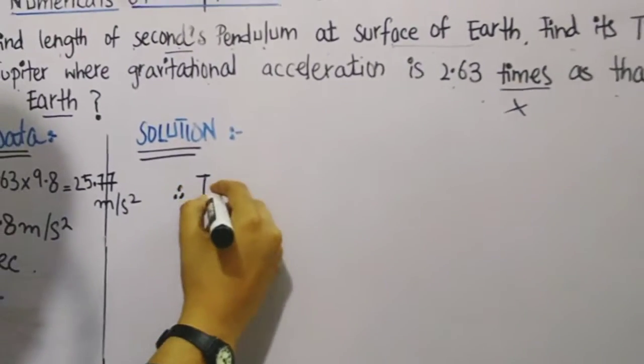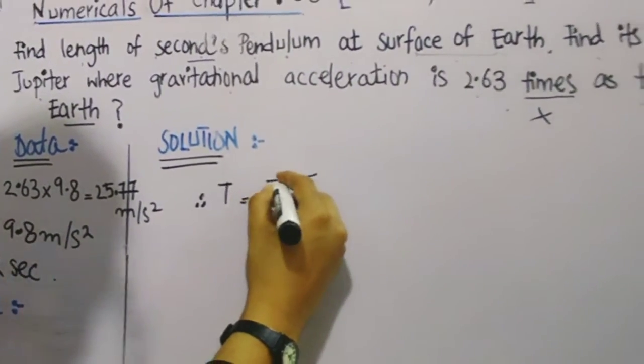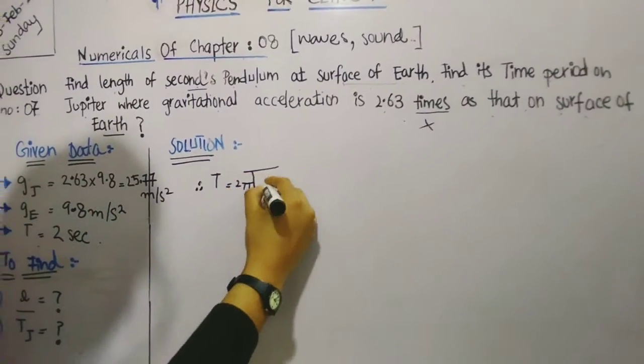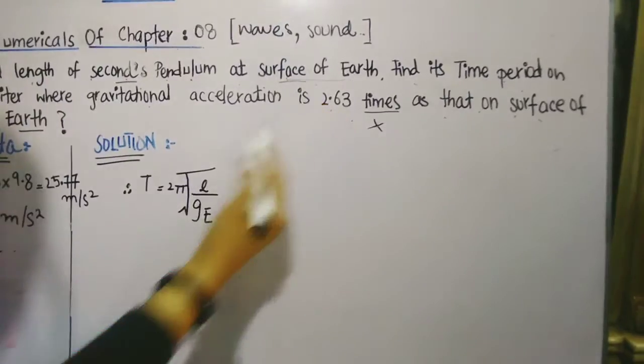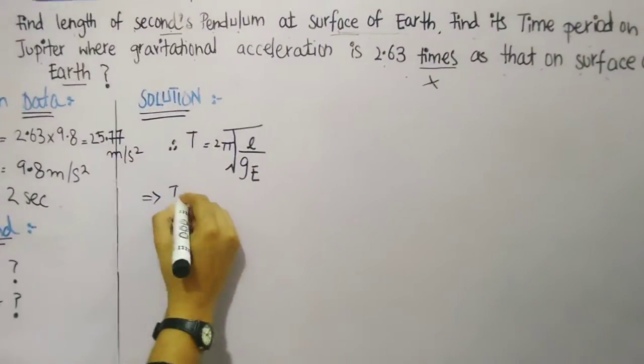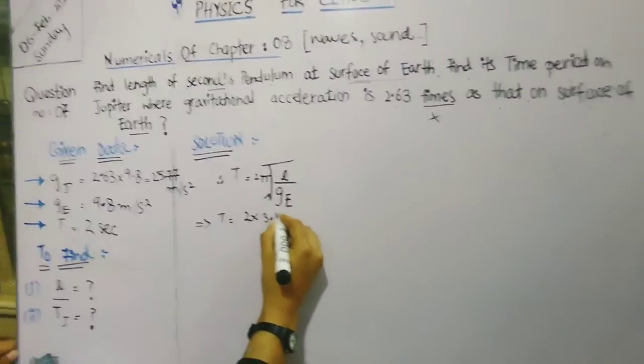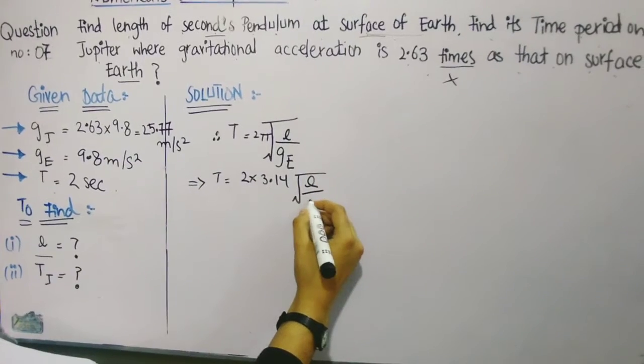So for the first step, I guess you all are aware to find the length on the Earth, it is very easy. We use the formula T equals 2π√(L/g), and here only the length is unknown. T equals 2 seconds, and 2 multiplied by 3.14, L is unknown, and gravity is 9.8 meters per second squared.